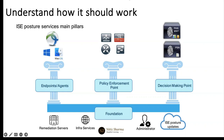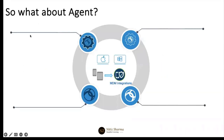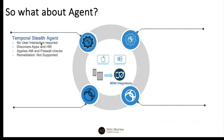With these three pillars, there are four different types of agents that you can have. Starting with AnyConnect — you have a temporary stealth agent. The word stealth means quiet movement, secretly — in order not to be seen or heard. So no user interaction is required. It automatically at the backend discovers apps for us, discovers hardware requirements, applies anti-malware checks, and checks firewalls. But remediation is not possible with a stealth agent.